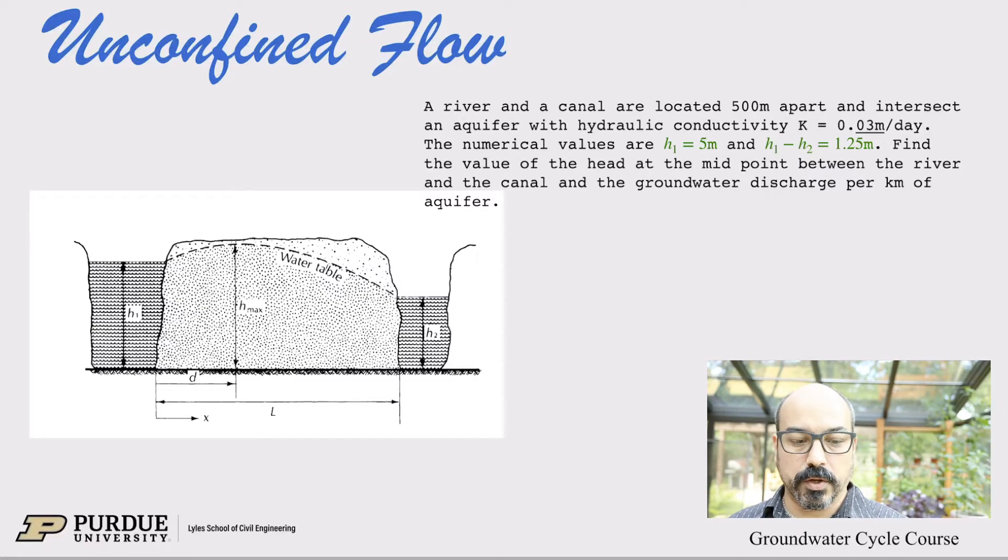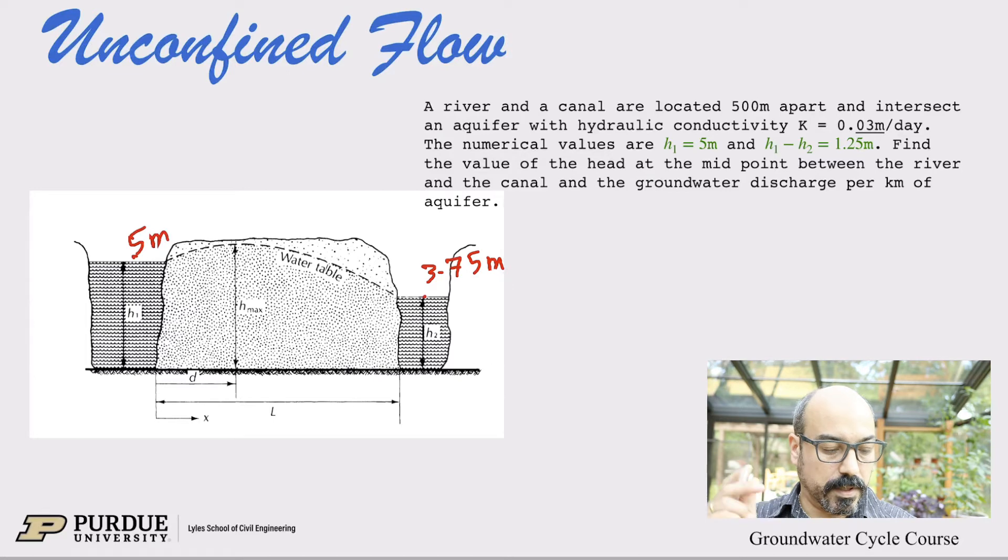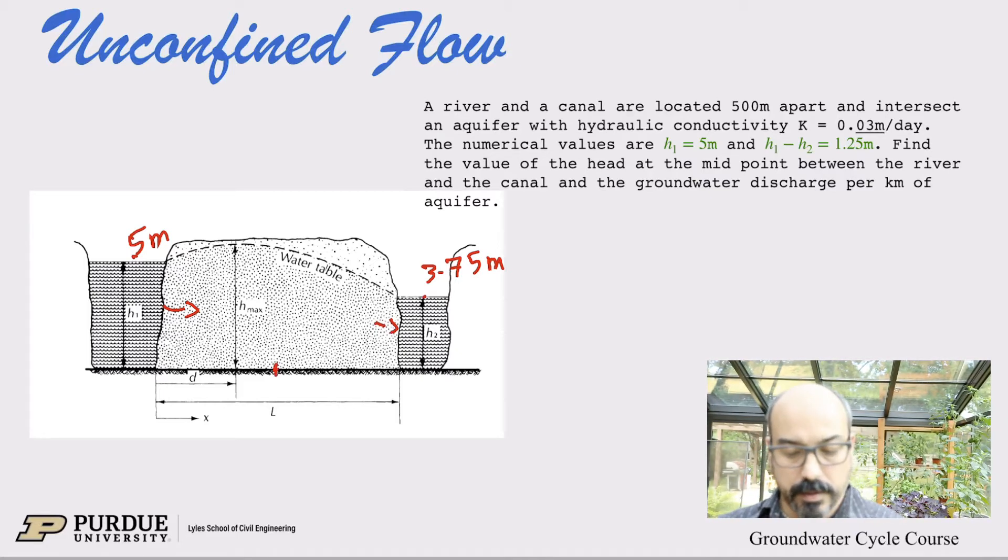The numerical values for H1 are five meters, so five meters here, and the difference between H1 and H2 is 1.25 meters, so that means this is 3.75 meters and this is five meters. So obviously we know that because the head is higher right here than there, we know that we're going to get some flow from the river to the canal. The questions are find the value of the head at the midpoint, so right here, between river and canal.